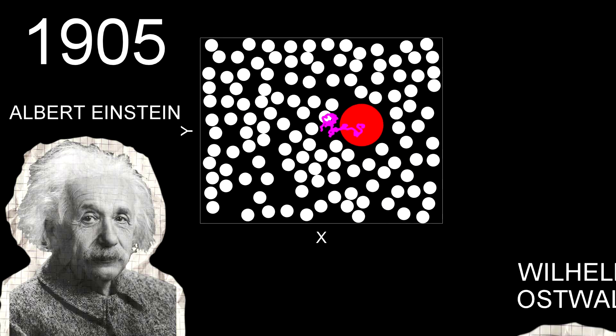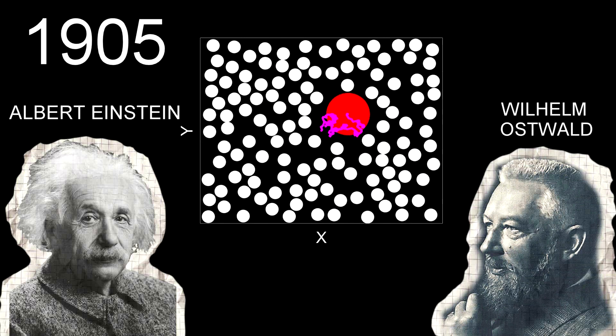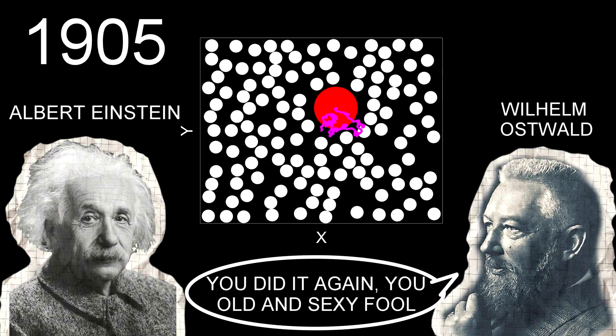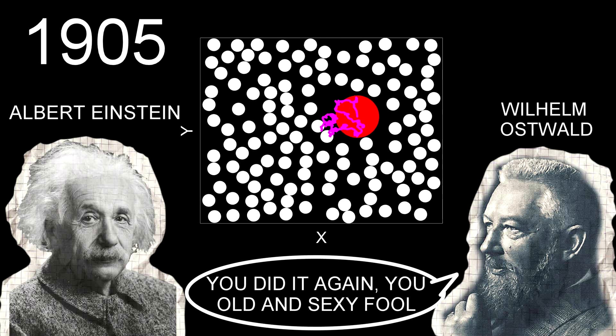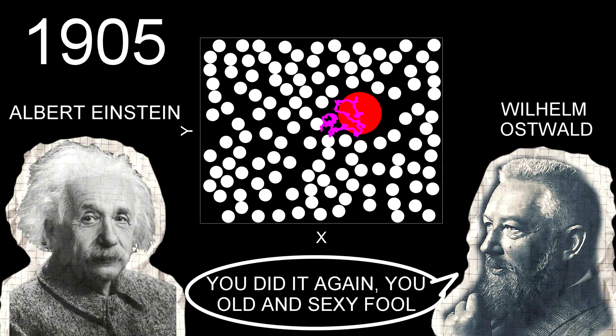Indeed, William Oswald, one of the last holdouts against atomic theory, claimed he had been converted to atomistics by the complete explanation of Brownian motion. It was a crucial step in modern physics.